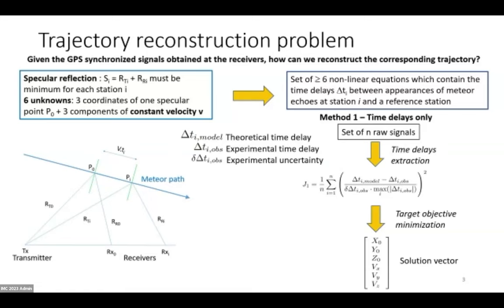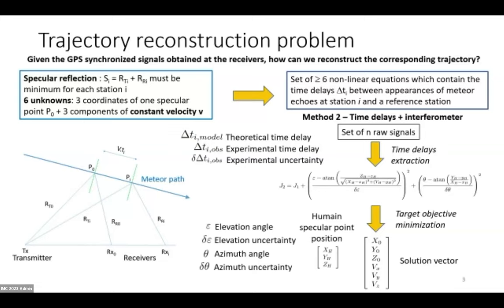This quantity here is called the target objective. This is the quantity you want to minimize. Why do you want to minimize it? Well, if you look at the numerator here, we basically have the difference between theoretical time delays and experimental time delays. By minimizing this quantity for each receiver, you basically get the trajectory which best fits your data.